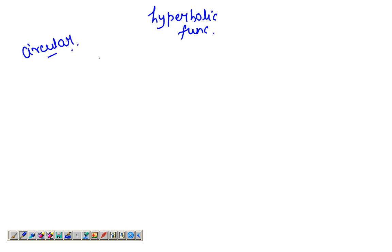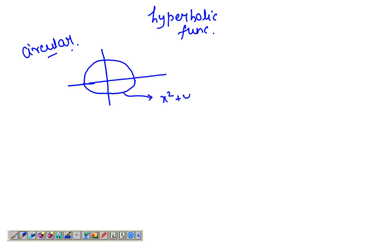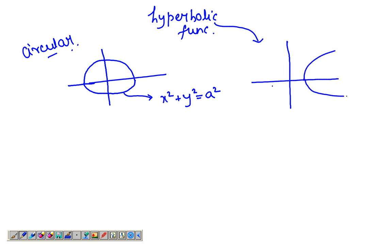What are these functions? Let's take a circle here. The equation of the circle would be something like x²/a² + y²/b² = 1. And let's take a hyperbola — its equation would be something like x²/a² - y²/b² = 1.